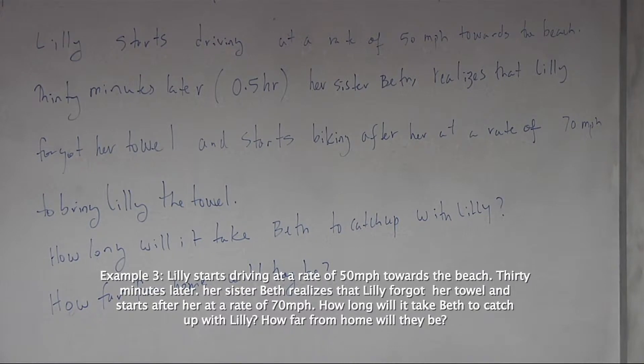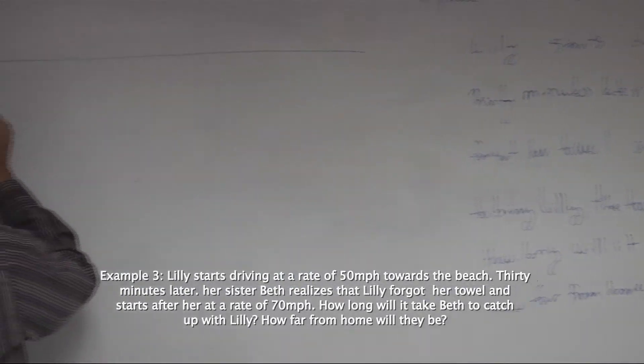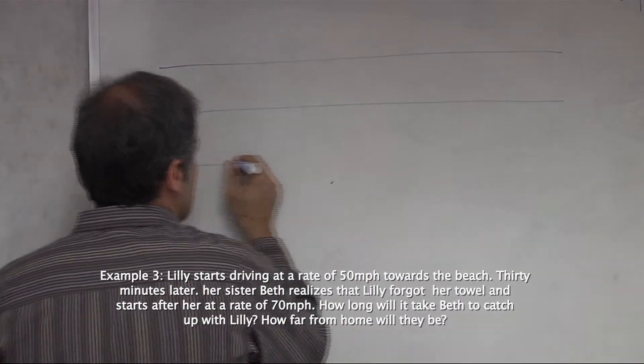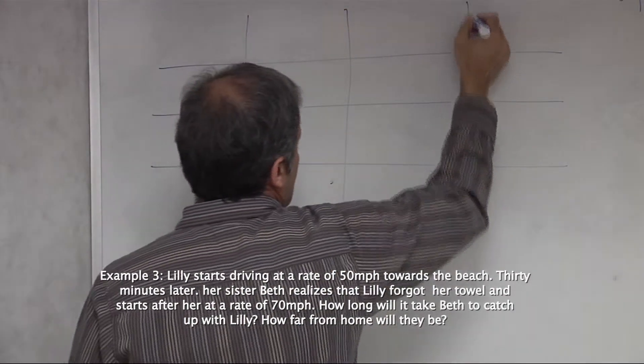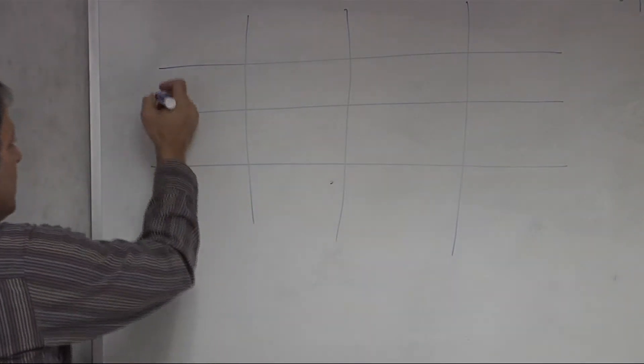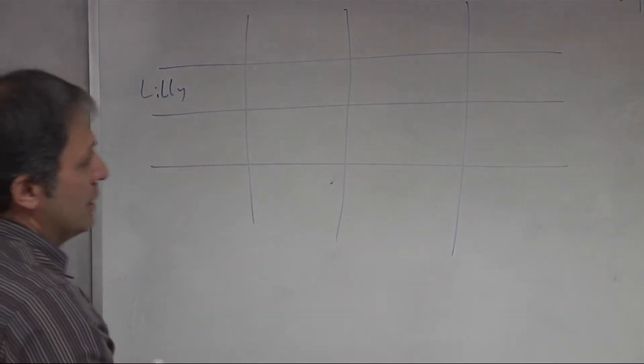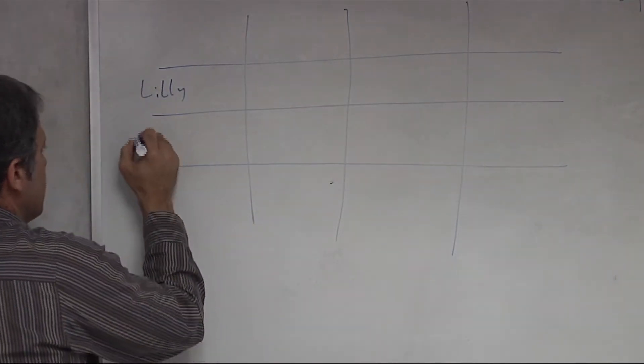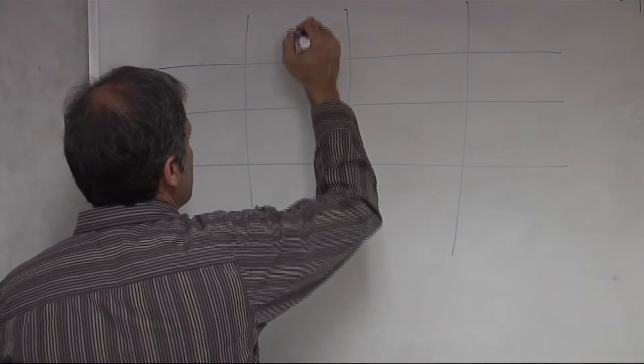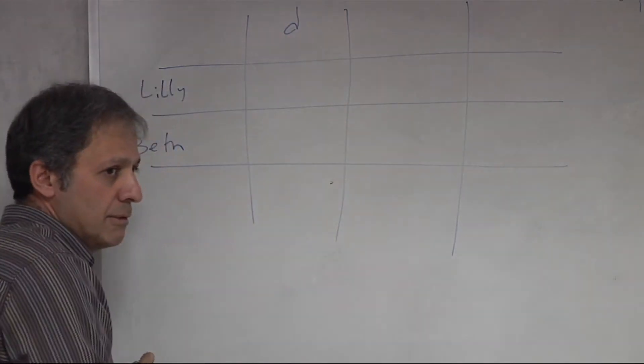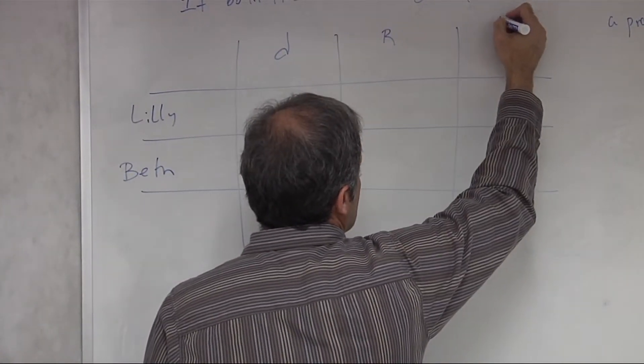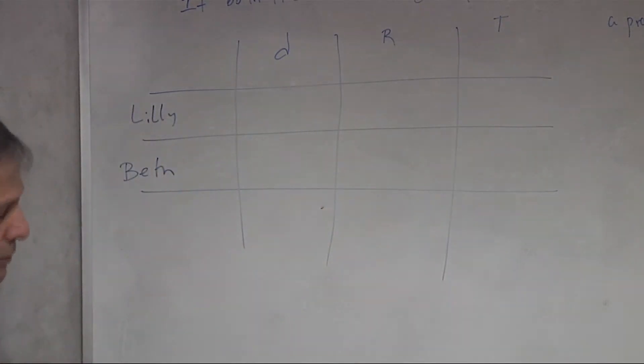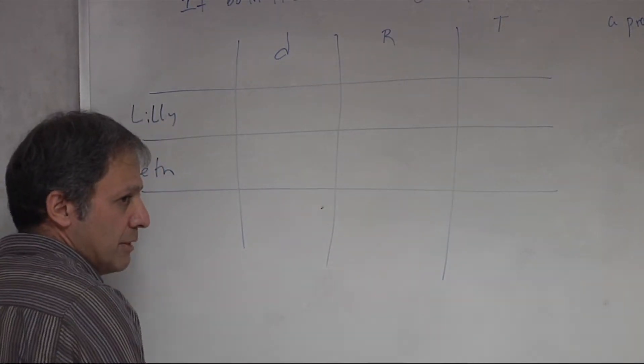This time I'm going to draw a table to show you this event, so I think you're familiar with this. In your classes you've seen these types of tables already. So we're going to put Lily here in this box, and then down below we're going to write her sister, her sister's name is Beth. So this column we're going to refer to as d for distance, rate for time - r for rate, and then t for time. Distance equals rate times time.